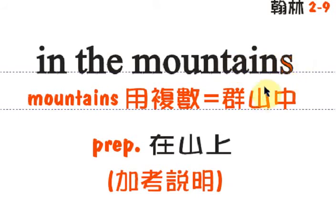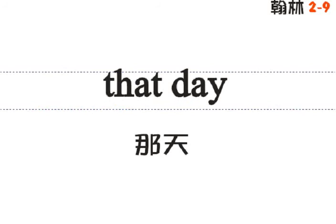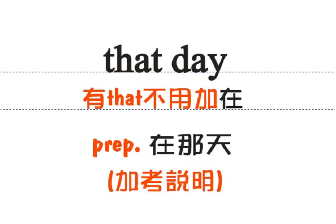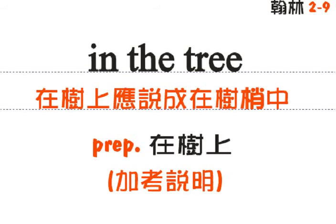Mountains之所以会用复数的原因是因为英文的讲法是在群山当中，在很多的山里面。你应该很难看到一座山是单独一座立在那边，通常都是很多山集中在一起，就像我们的中央山脉一样。That day，That不用再加在了。In the tree。